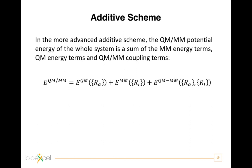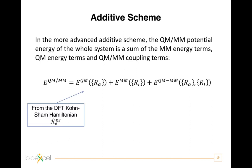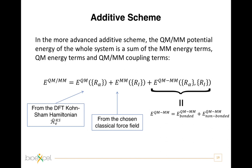This additive approach is the coupling scheme implemented in the QM/MM interface of the CP2K code that will be described in the tutorial. The quantum energy term usually comes from the DFT Kohn-Sham Hamiltonian in such an additive scheme. The classical energy term comes almost always from a classical force field, and its choice can be limited by the availability of force fields implemented in the code. While the third term, describing the interaction between quantum and classical regions, is usually decomposed in two parts: the bonded and the non-bonded parts.